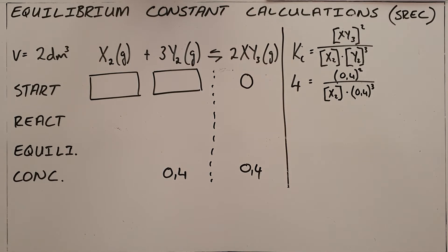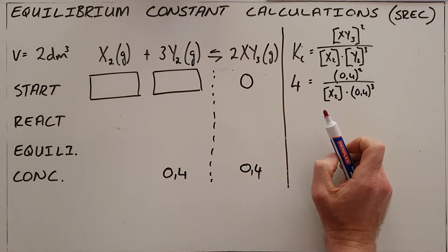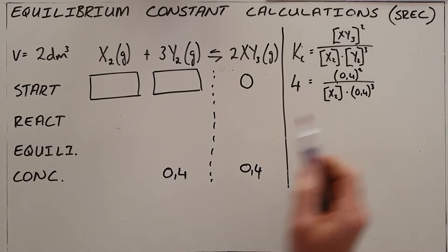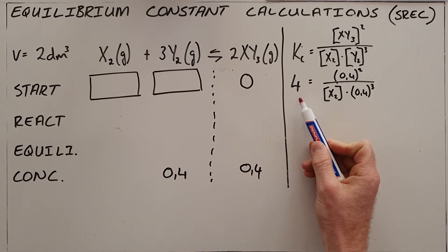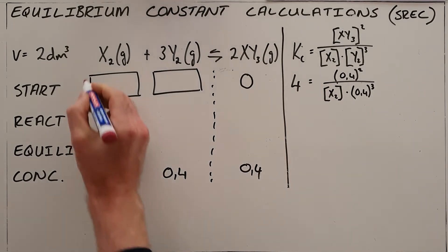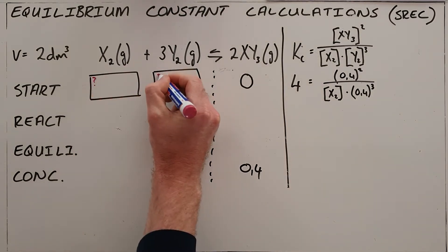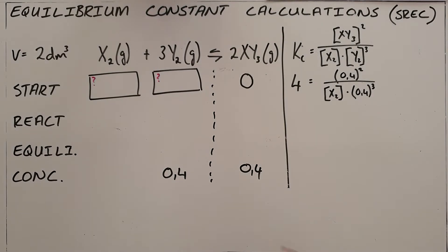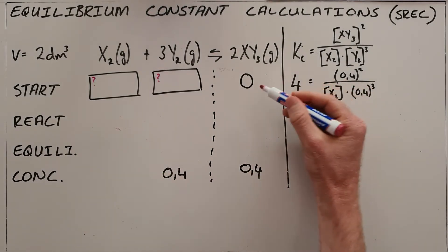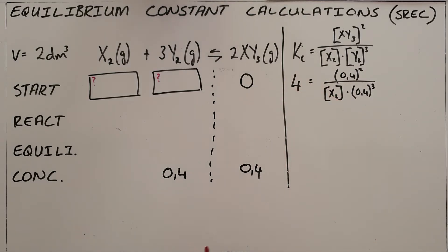A typical example is this one where we've been told that the equilibrium constant for this reaction at this temperature is 4, and we are told that unknown amounts of x2 and y2 are placed in a sealed or empty container, which means that the initial quantity of xy3 is 0. At equilibrium, it is found that the concentration of y2 and xy3 are both 0.4.